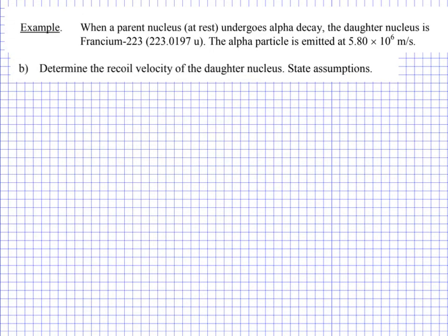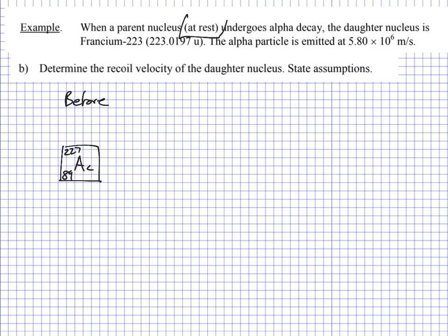For part B, we need to find the recoil velocity. Let's draw this schematically. Before the nuclear decay — which we're treating like an explosion — we simply had Actinium-227 sitting at rest, not moving. We assume it's at rest, setting aside kinetic theory or quantum mechanical considerations about atomic motion.